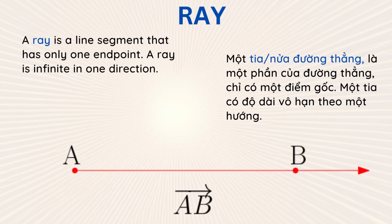A ray is a line segment that has only one endpoint. A ray is infinite in one direction. In the picture, the ray starts at the endpoint A. If B is a point on this ray, the ray can be denoted by AB with an arrow overhead.